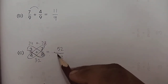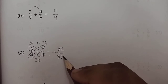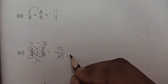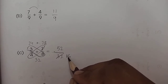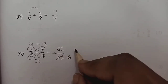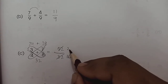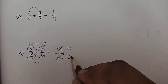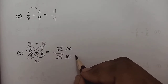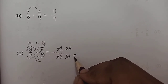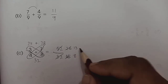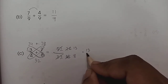We can see that both 52 and 32 come in the table of 2. So 32 divided by 2 gives 16, and 52 divided by 2 gives 26. Again, both can be divided by 2: 16 divided by 2 gives 8, and 26 divided by 2 gives 13. So the answer is 13 upon 8.